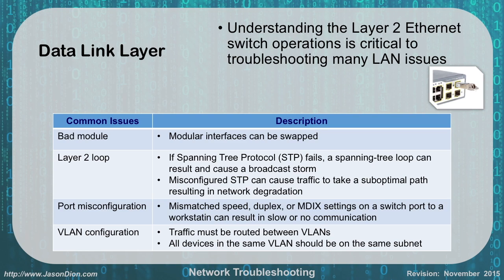The data link layer, layer 2 — understanding layer 2 switch operations is critical to many LAN issues. You can have a bad module; on most professional switches you can swap out the interface module, even changing from cat5e to a fiber connector if needed. Layer 2 loops: if your Spanning Tree Protocol is failing you'll get a spanning tree loop, which can cause a broadcast storm. Misconfigured STP can cause traffic to take sub-optimal paths, resulting in network degradation. You either get loops or sub-optimal paths that slow down the network.